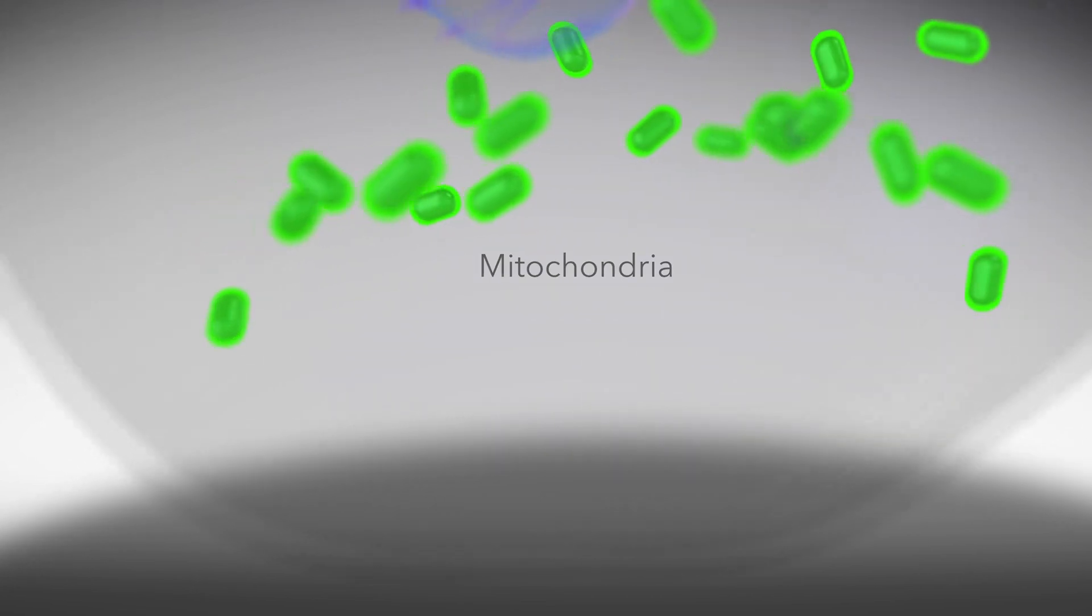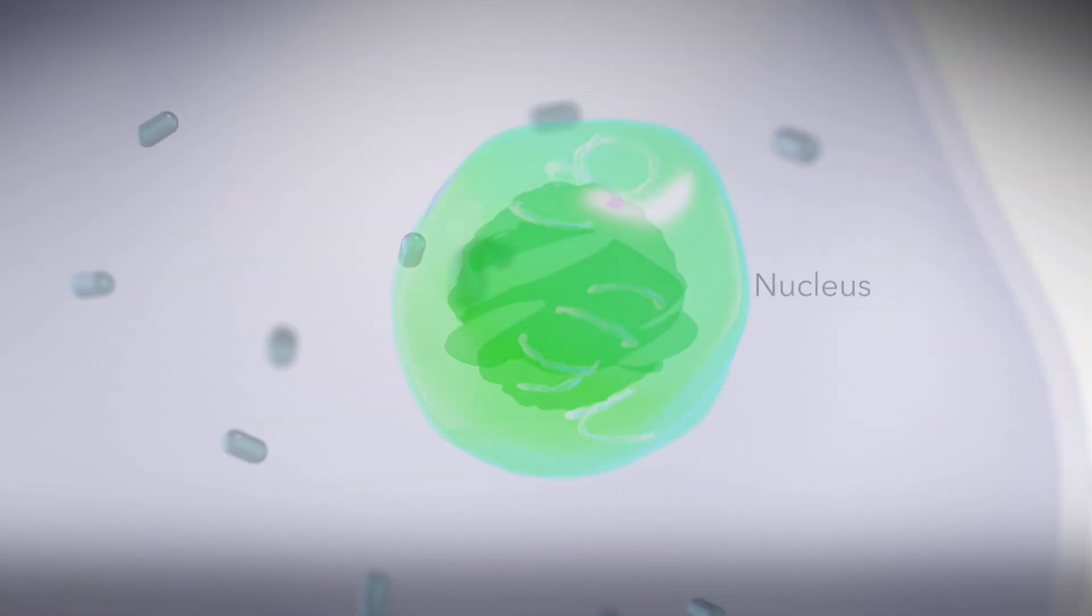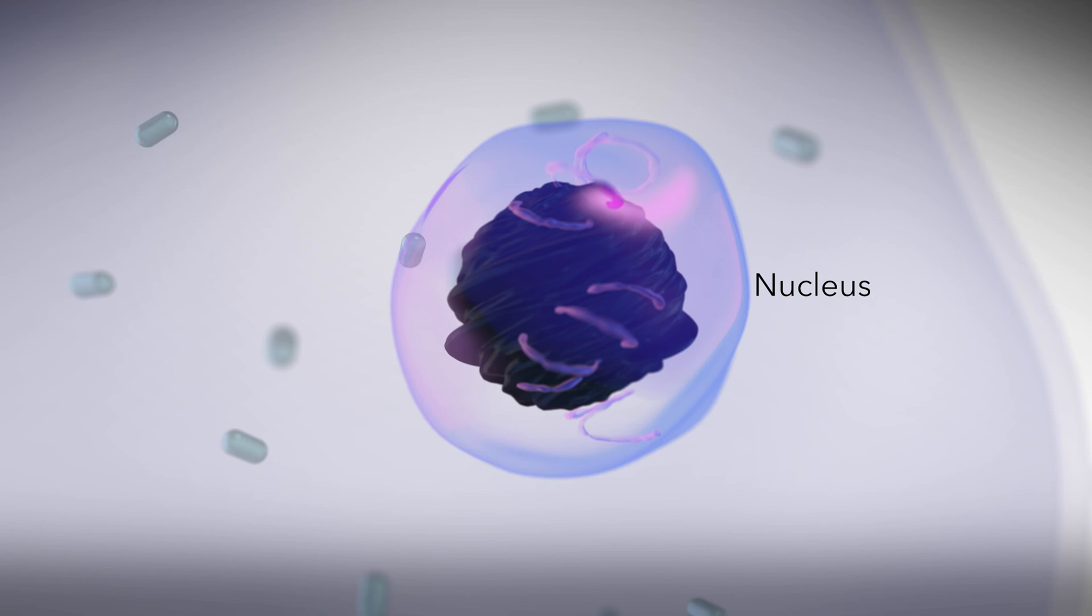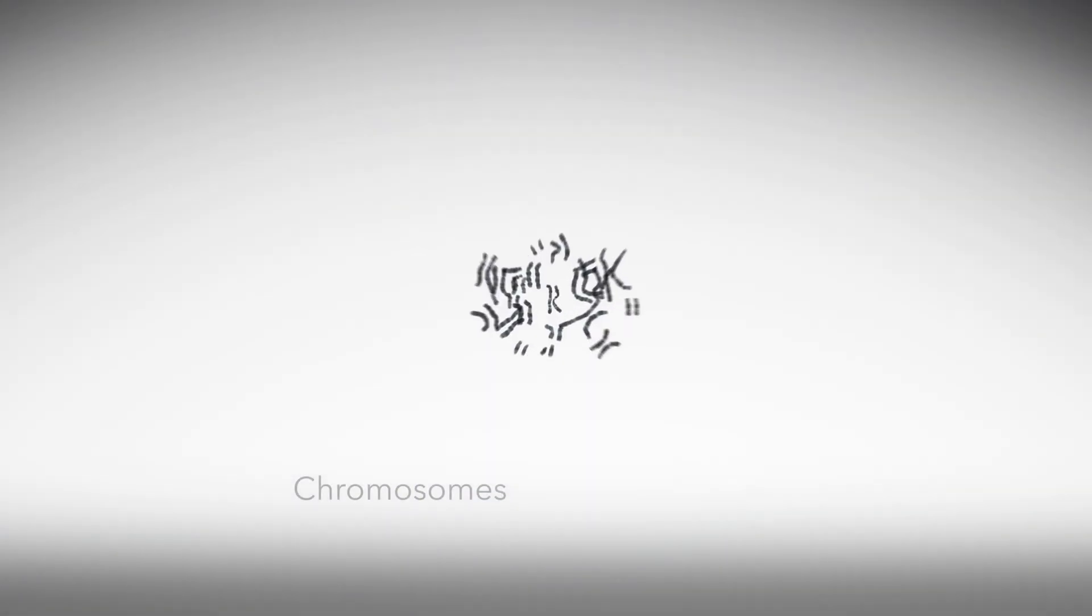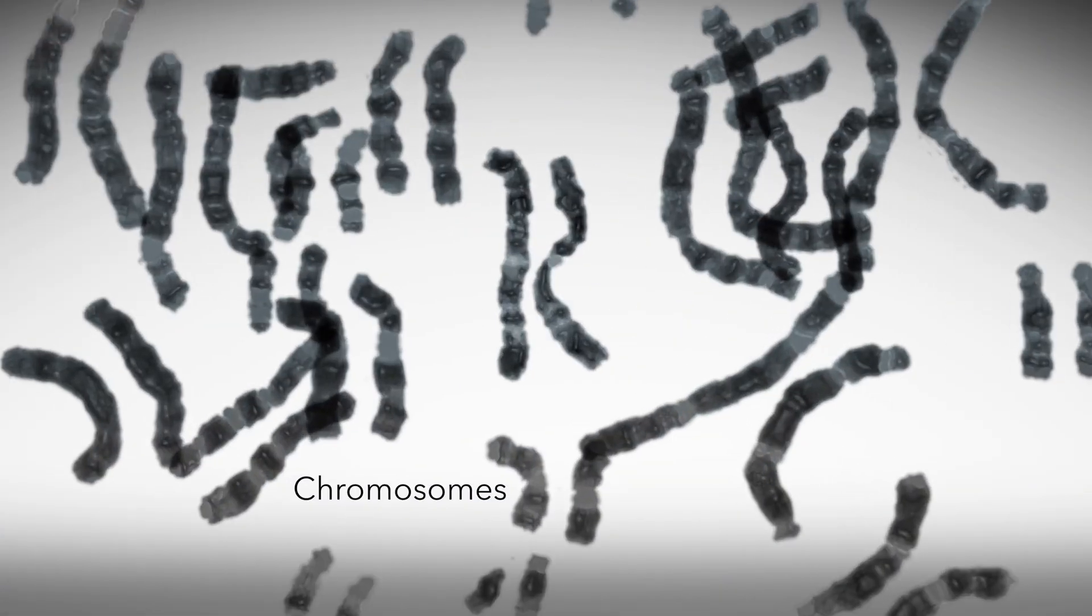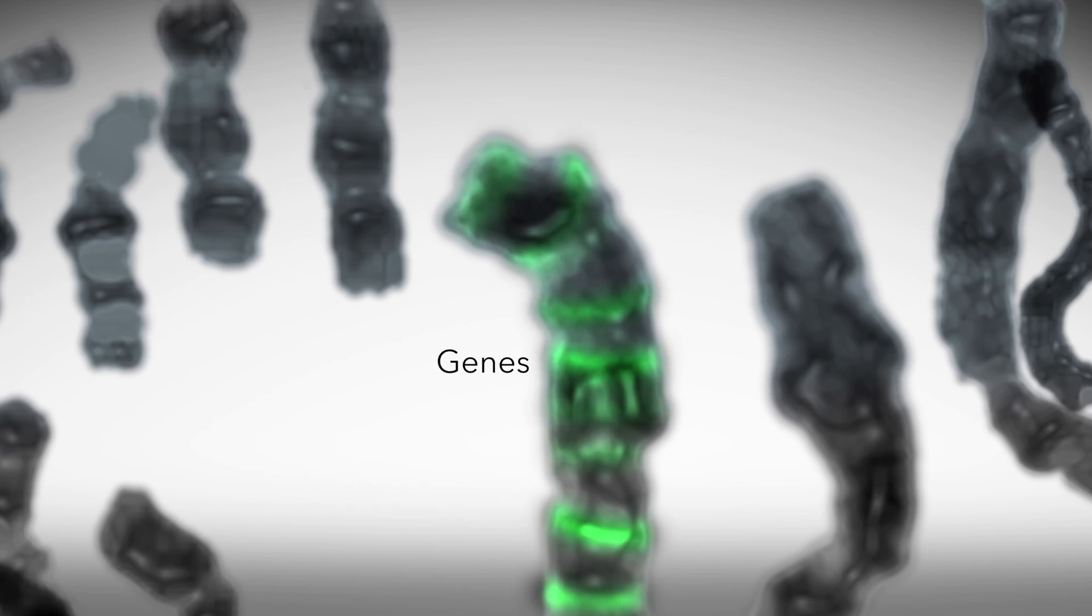which make energy for the cell. The nucleus is the command center of the cell and holds the blueprints for how the cell functions. Inside the nucleus are chromosomes which are made up of genes, which in turn are made